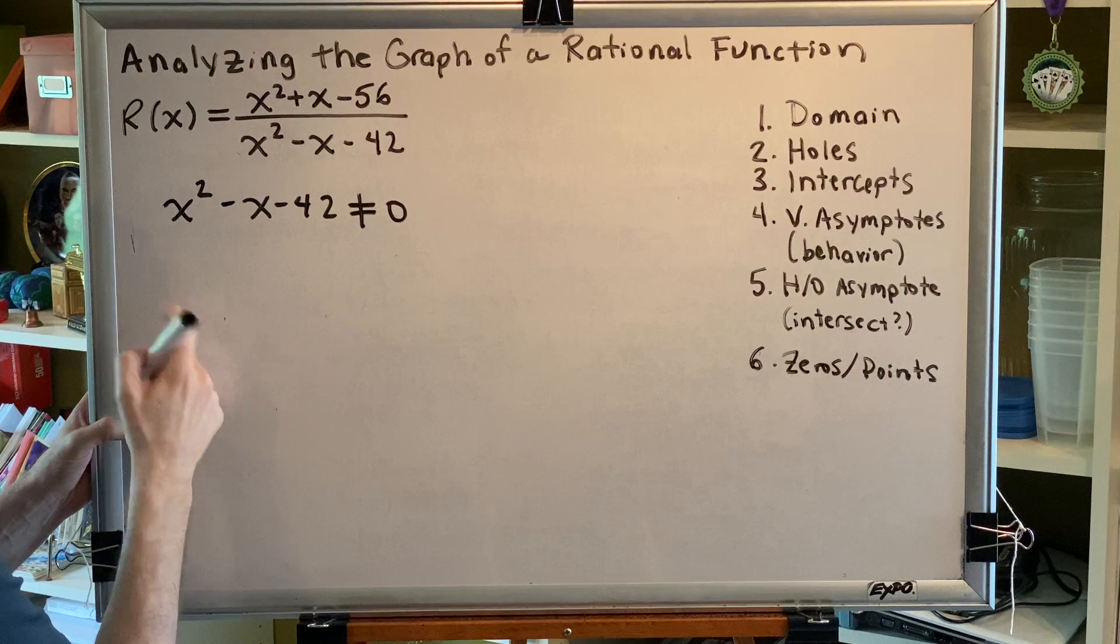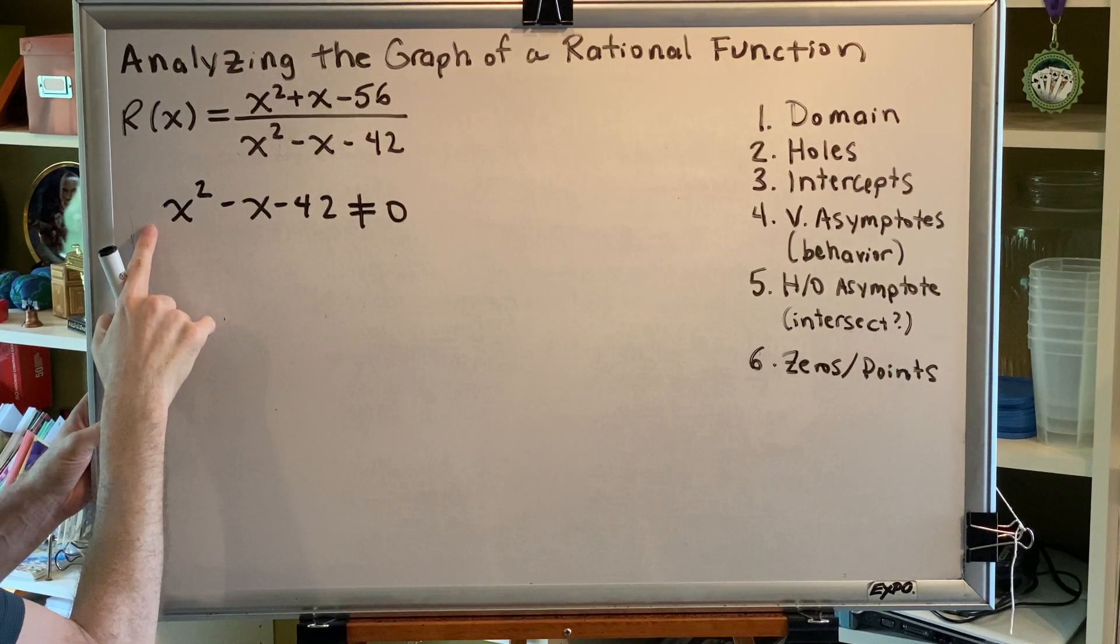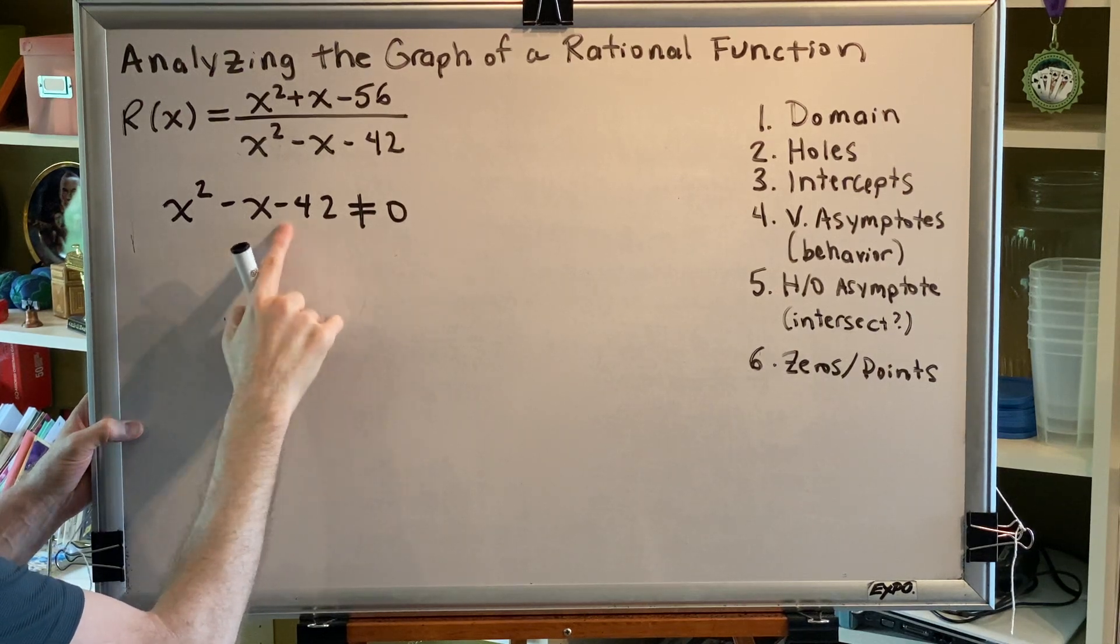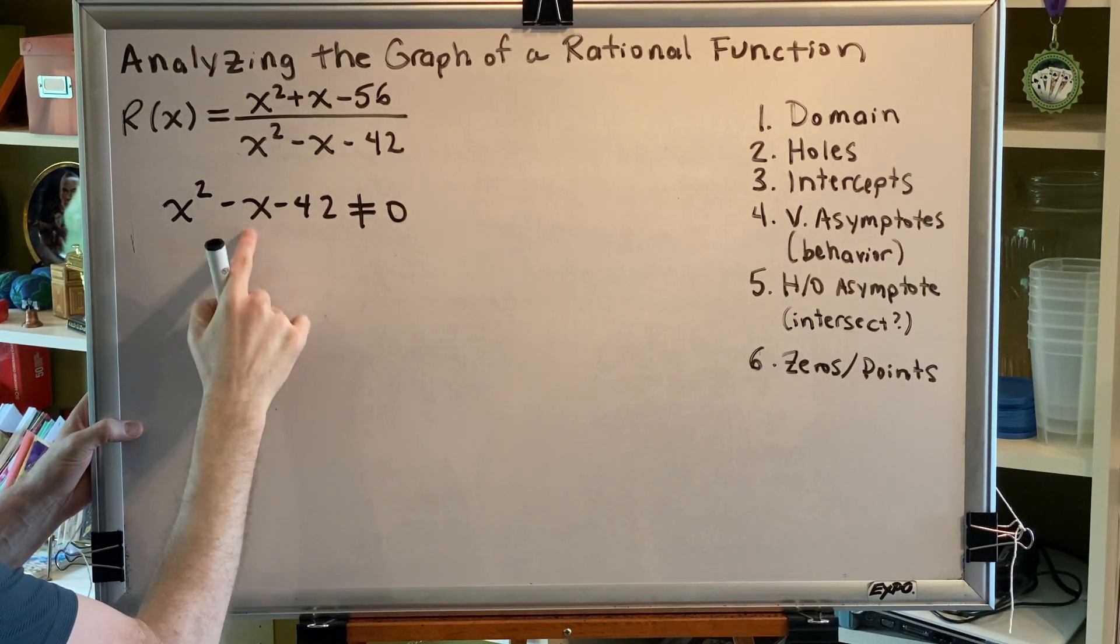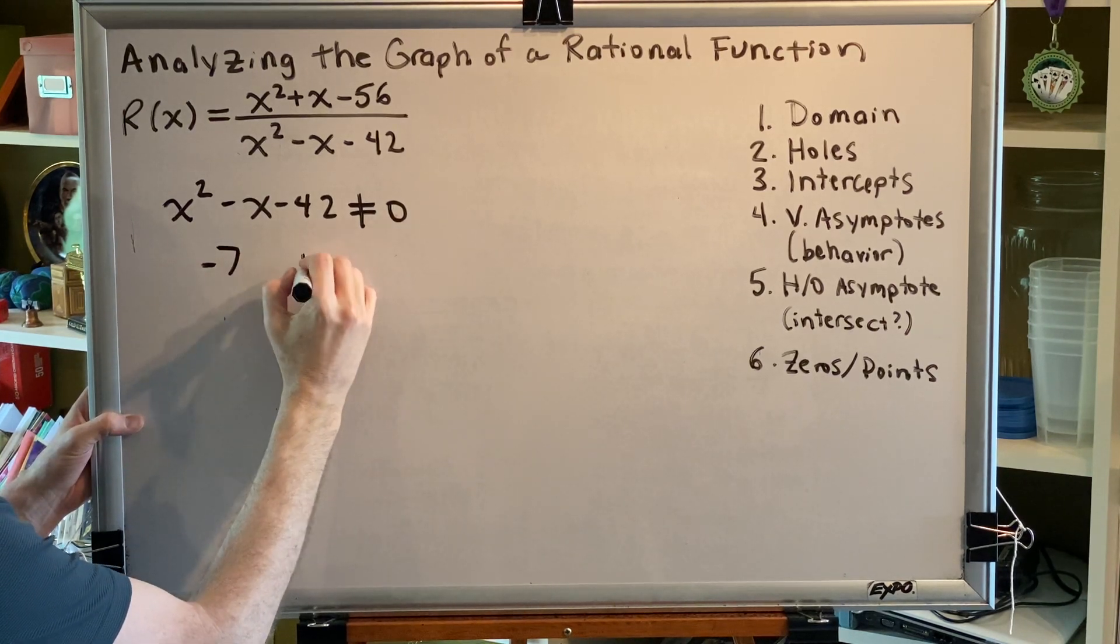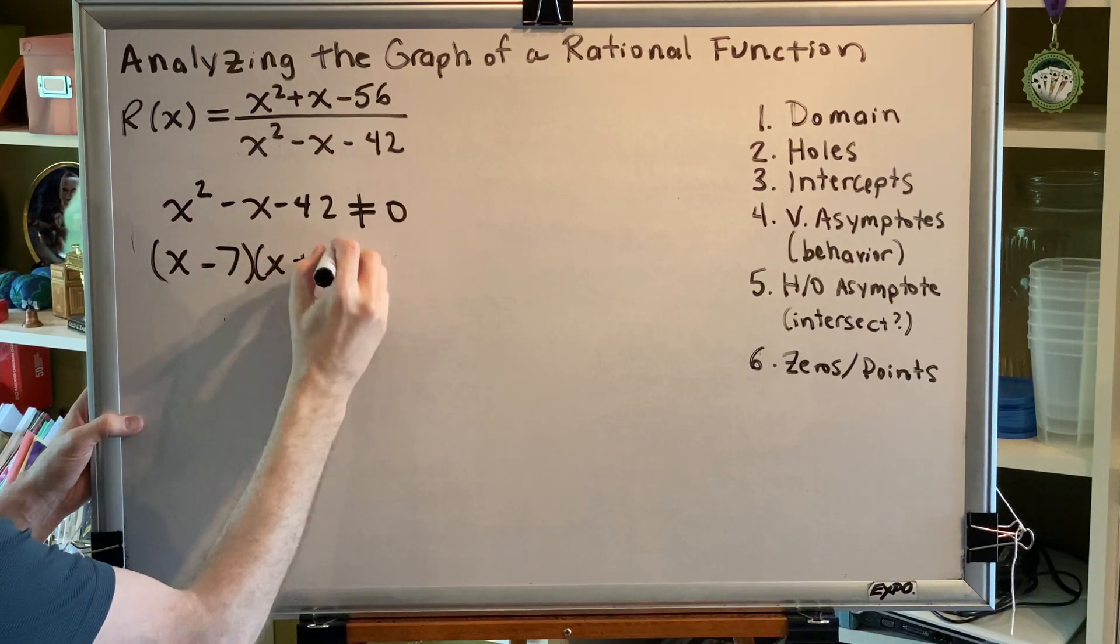Factoring the left hand side and noting that we have a simple trinomial with a leading coefficient of 1, we just need to come up with two numbers that multiply to make negative 42 but add to make negative 1. Those numbers are negative 7 and positive 6. Placing an x in front of each one gives us our factors.